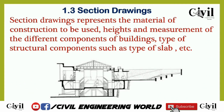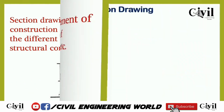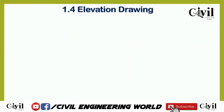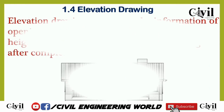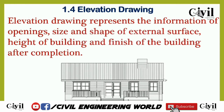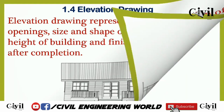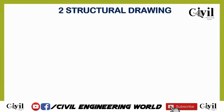The third sub-type is the section drawing, which gives the measurements and heights of different components of buildings, including slabs and structural components. The fourth is the elevation drawing, which shows the elevation of openings, sizes of external surfaces, and also the finishing of the building after completion.